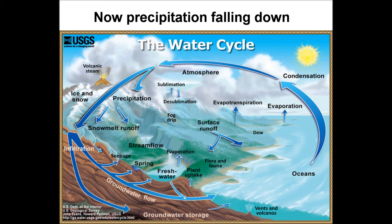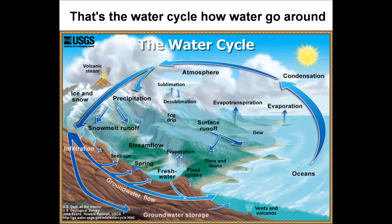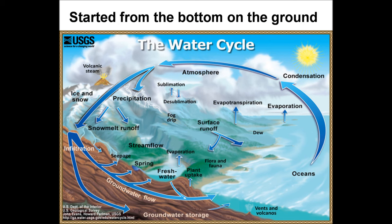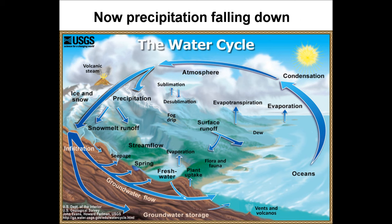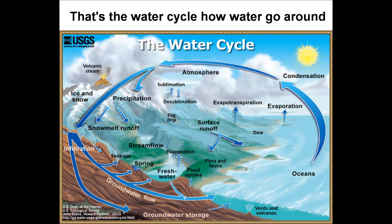Cause it started from the bottom on the ground, it evaporated and condensed into a cloud. Now precipitation falling down — that's the water cycle, how water go around.